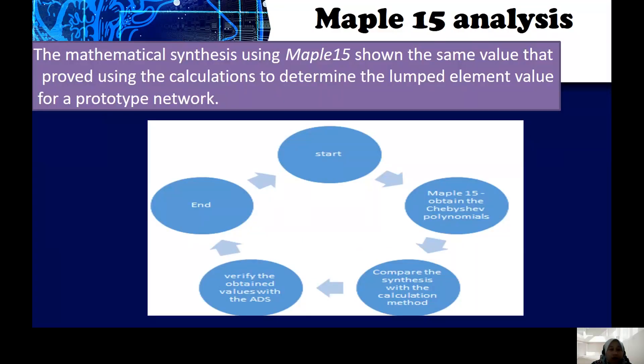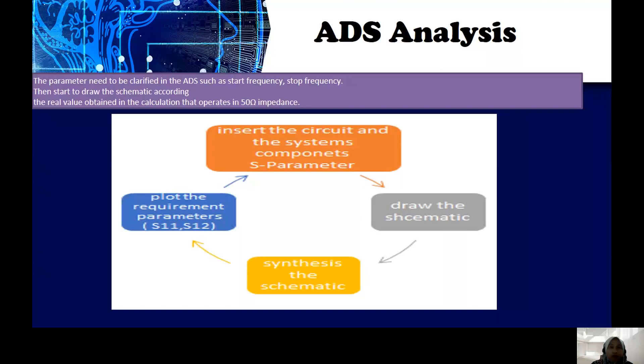On top of that, MAPLE 15 is used in this filter design to reconfirm the analytical formula used in the analysis stage, where MAPLE 15 will yield the correct value of the components. Once the confirmation is done, by using ADS, the Chebyshev low-pass filter is designed and the response of ideal filter is tabulated.